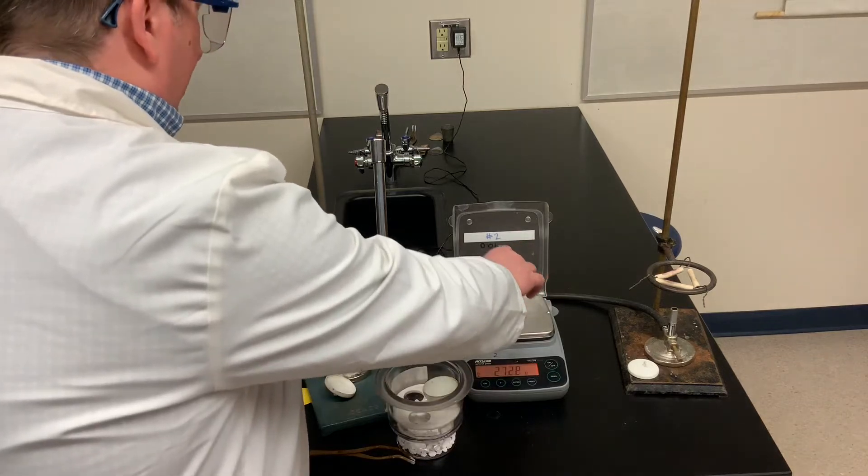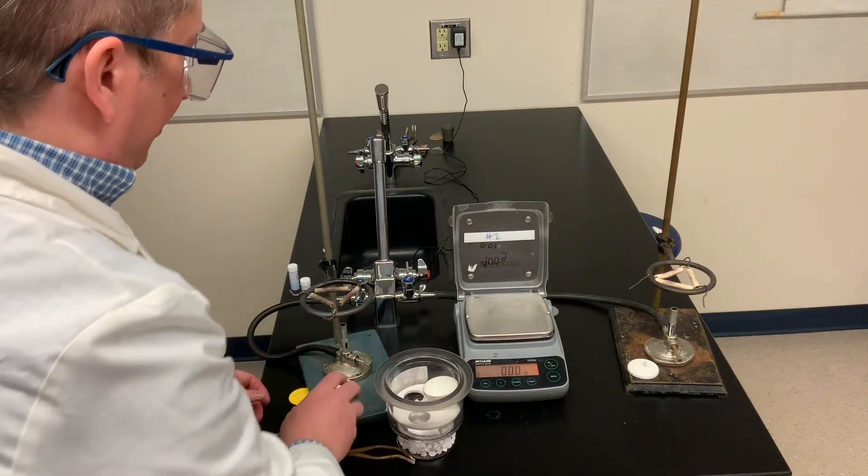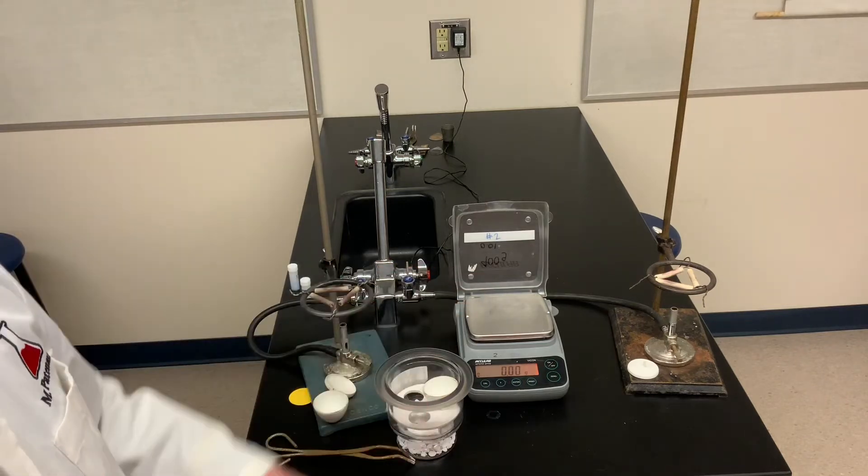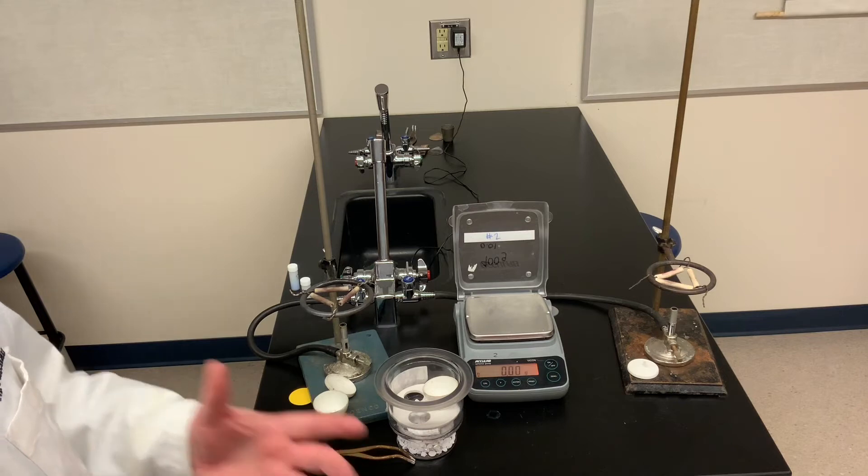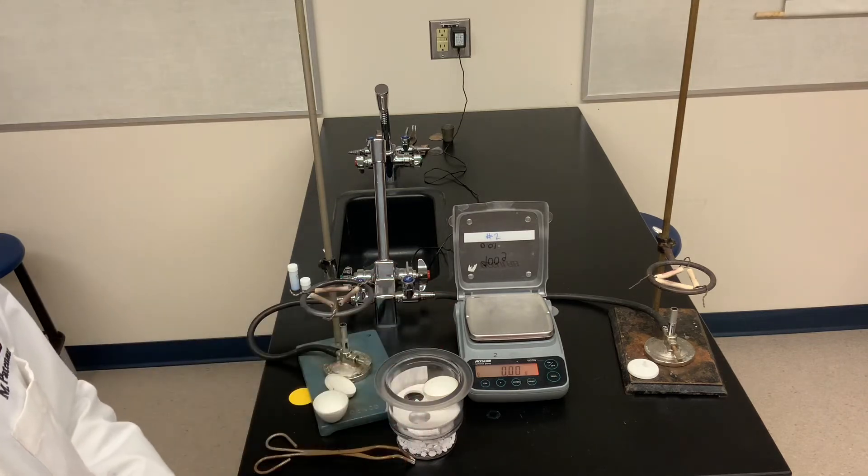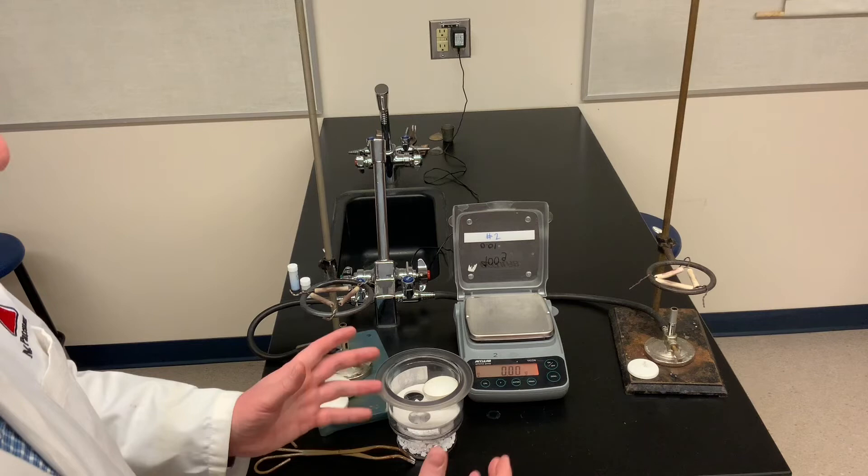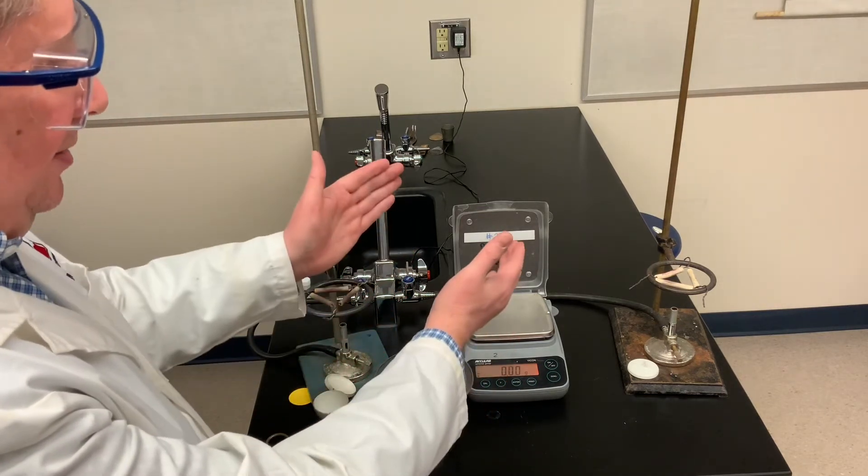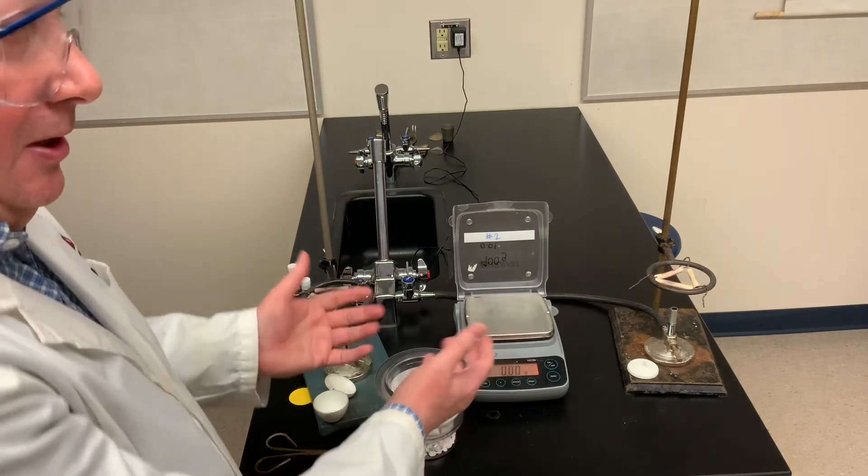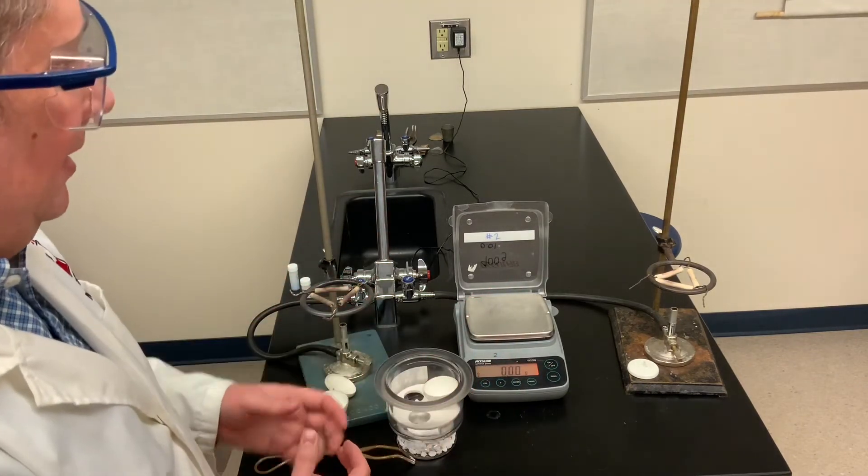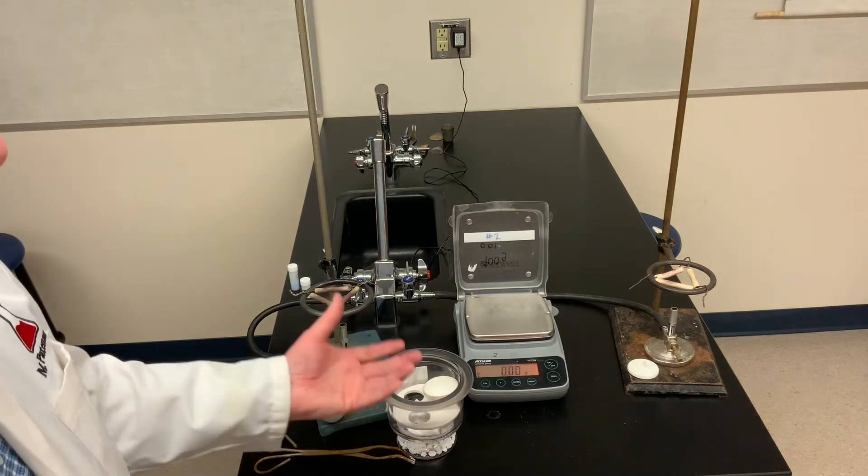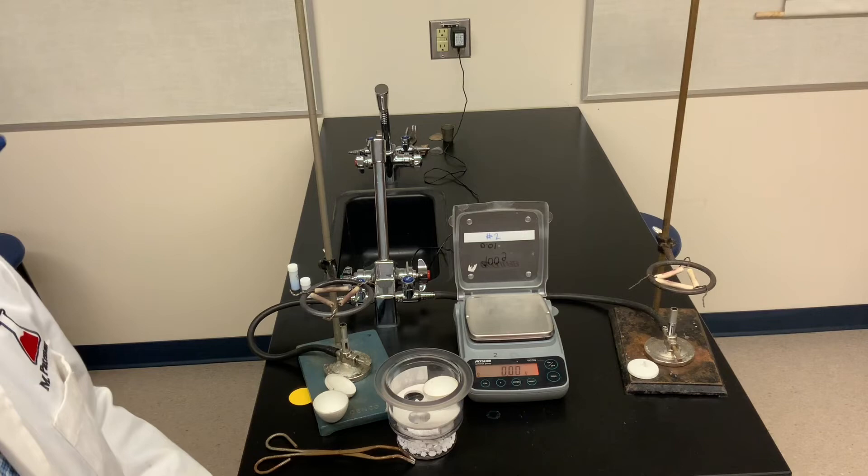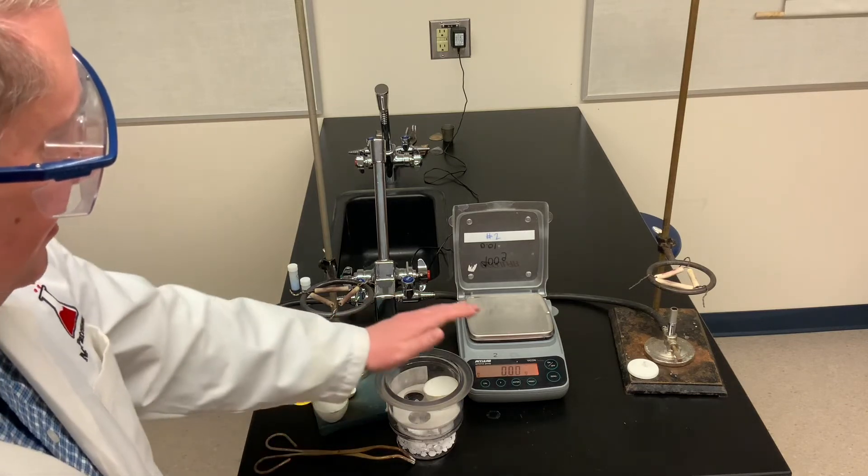Now you don't want to weigh a hot crucible for two reasons. Number one, when it's hot, you could damage the electronic balance. So don't put hot objects on electronic balances. But secondly, a hot object warms the air around it as well, and that warm air rises. The warm air rising lifts the object, gives it some buoyancy, and that could affect your mass reading. For a heavy object, that's a very small error. But for light objects, that could be significant.